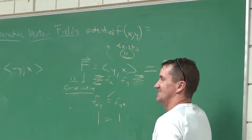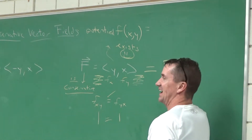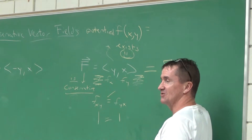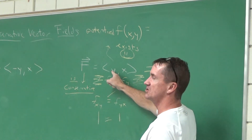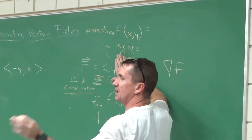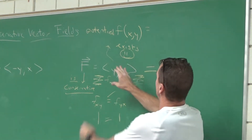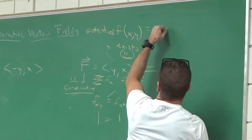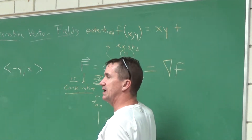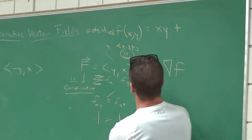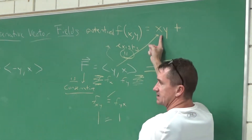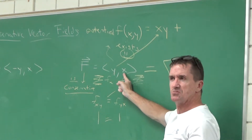Can you help me find the potential function? We integrate. The integral of the x-component with respect to x gives XY, and the integral of the y-component with respect to y also gives XY. When finding the potential function, if you get any repeated expressions, you toss out the repeats.